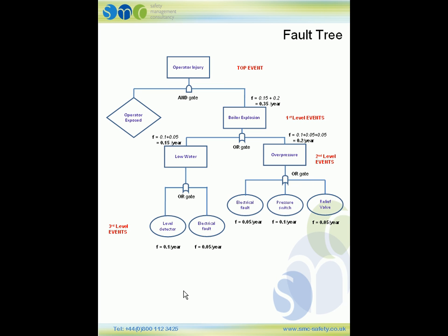So now we have the frequency of the boiler explosion. From the question, the operator was exposed for 20% of the time, so the frequency for the operator being exposed is 0.2 per year. To get the frequency for the operator injury we have an AND gate, so rather than adding, we multiply the frequencies. The frequency is 0.2 times 0.35, giving us a frequency of 0.07 per year, which is the answer to the question.